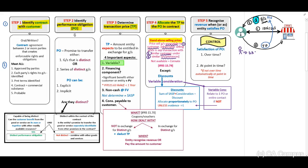Step five: we may now recognize the revenue when or as the entity satisfies the performance obligation. The entity satisfies the performance obligation when control is passed to the customer. Control is the keyword. When discussing control in a theory question, you need to think about the future economic benefits of that asset — who will receive the future economic benefits.